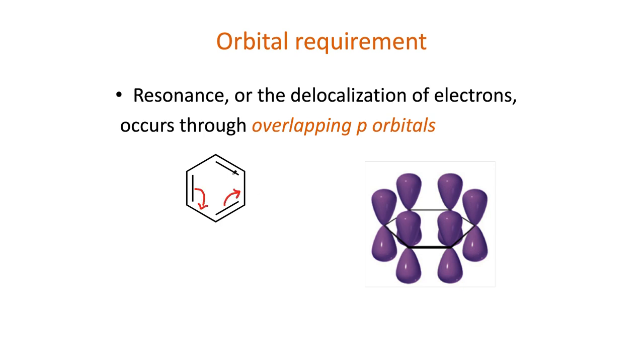For delocalization to be possible, a few requirements need to be met. First, p orbitals need to overlap to create a pi system. For example, benzene has two major and equivalent resonance structures, which contribute equally to the resonance hybrid.